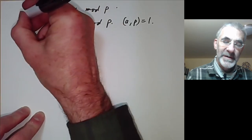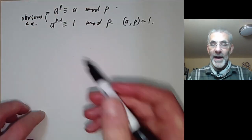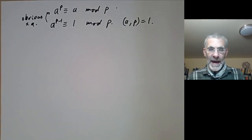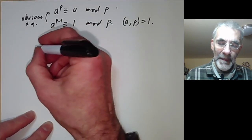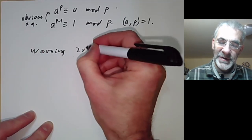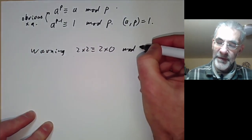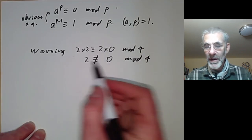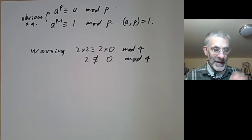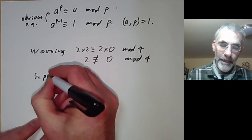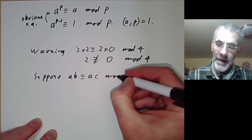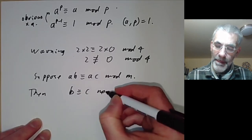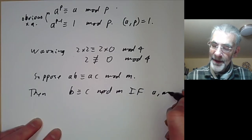The fact that the second version implies the first is obvious — we just multiply by a. You might think you can go from the first to the second by dividing by a, but you've got to be careful when dividing in congruences. For example, 2 times 2 is congruent to 2 times 0 mod 4, but 2 is not congruent to 0 mod 4, so we can't divide by 2. So when can we divide? Suppose ab is congruent to ac modulo m — then b is congruent to c mod m if a and m are co-prime.